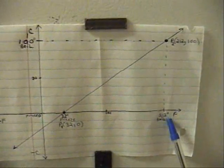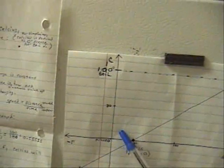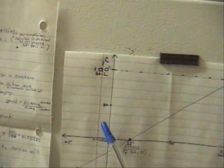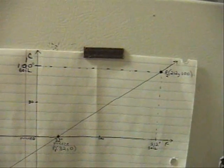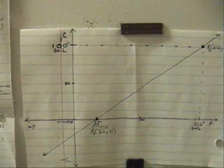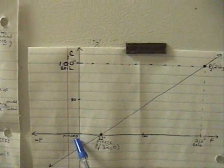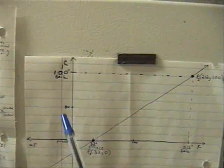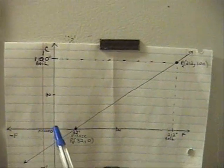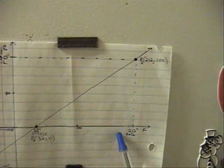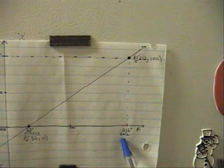Okay, here we have Fahrenheit on this scale, and we have centigrade or Celsius on this scale. Celsius is defined where 0 is freezing and 100 is boiling. Fahrenheit is defined where 32 is freezing and 212 is boiling.